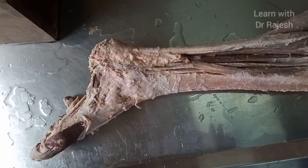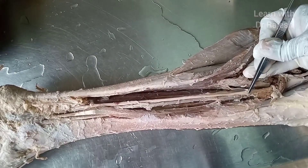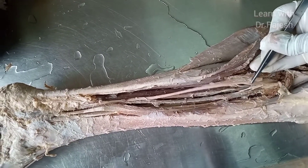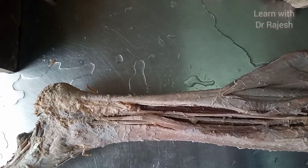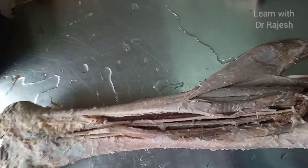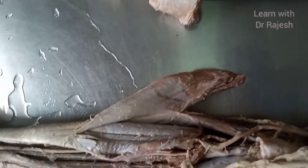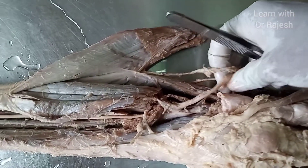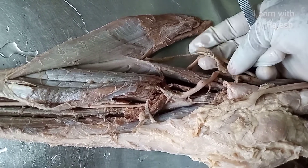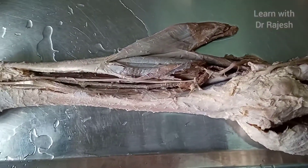All the posterior compartment muscles are supplied by the tibial nerve, which is a branch coming from the sciatic nerve. The sciatic nerve divides into the tibial nerve and the common peroneal nerve. That is the end of the muscles of the leg. Thank you.